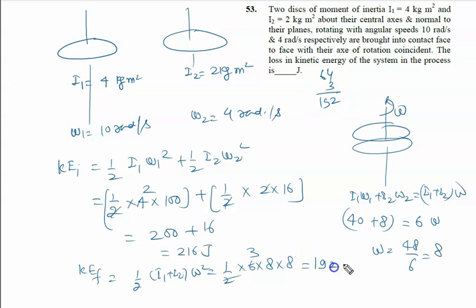The difference, or loss in kinetic energy, is 216 - 192 = 24 joules. So the answer to this problem is 24 joules.